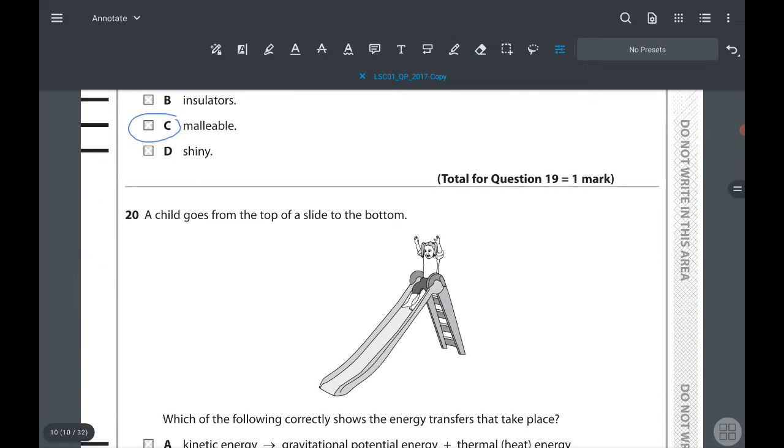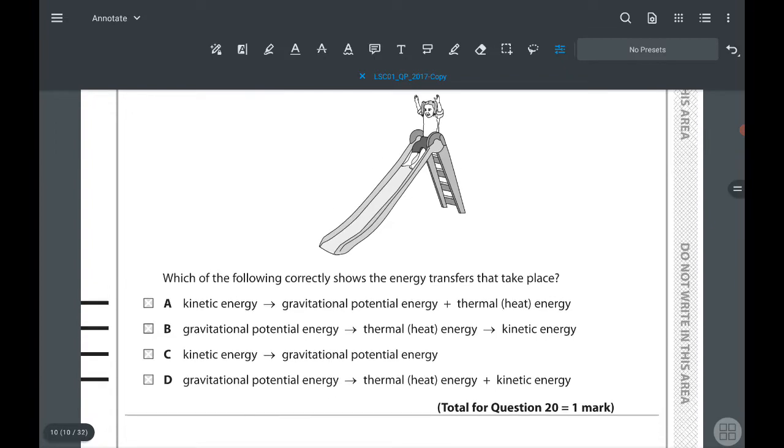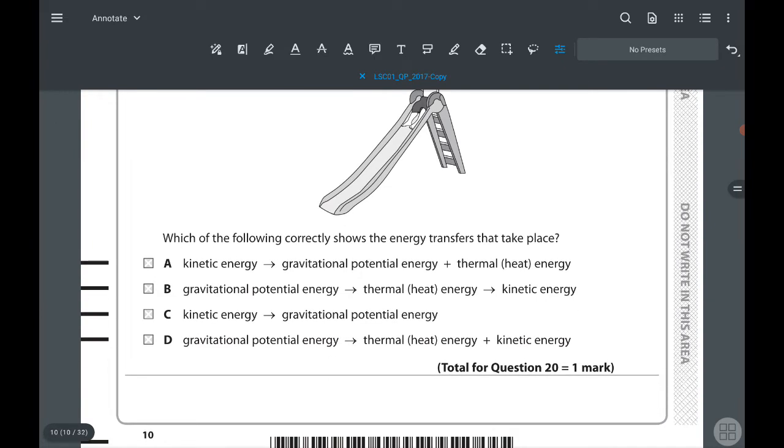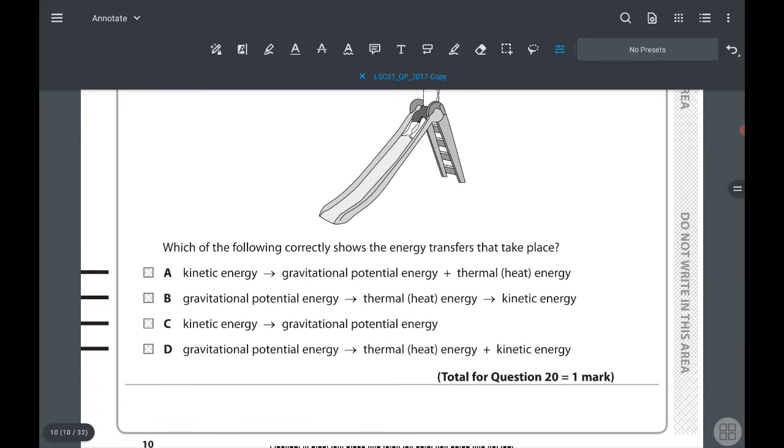20th question: a child goes from the top of a slide to the bottom. Which of the following correctly shows the energy transfer that takes place? We know at the top of the slide, the person has more gravitational potential energy. At the top of the slide, while the child is moving, that child will gain kinetic energy and also thermal energy. So answer is D. It has to be plus over here, not an arrow, because at the same time both of these energies will be there.